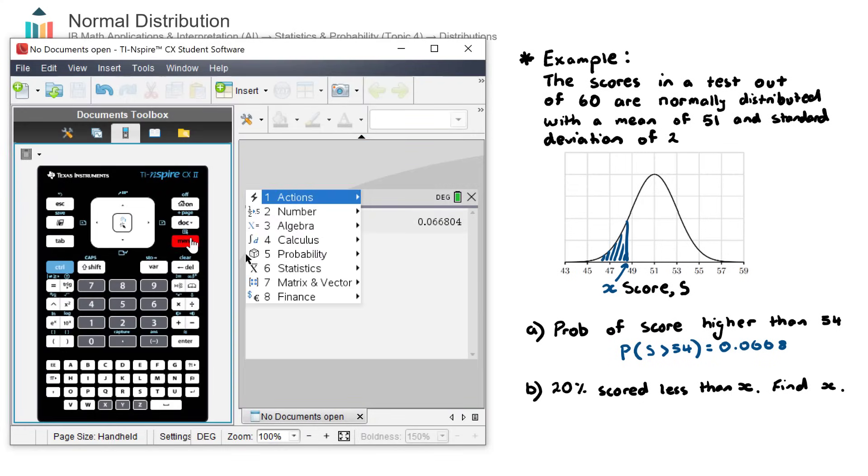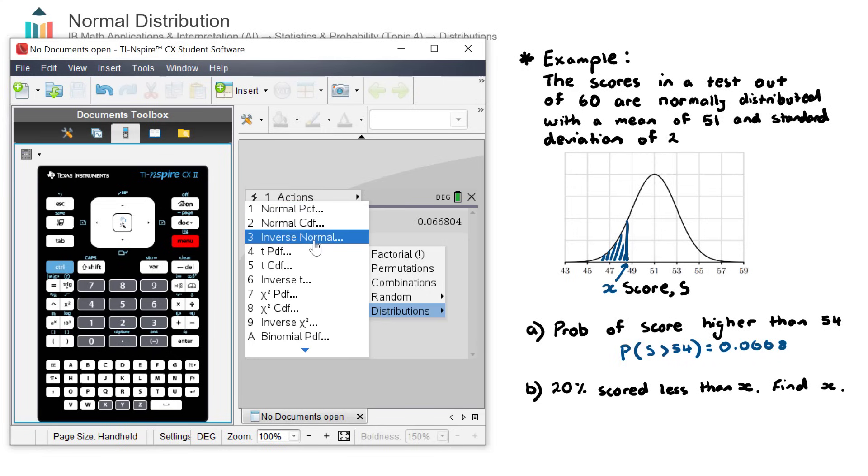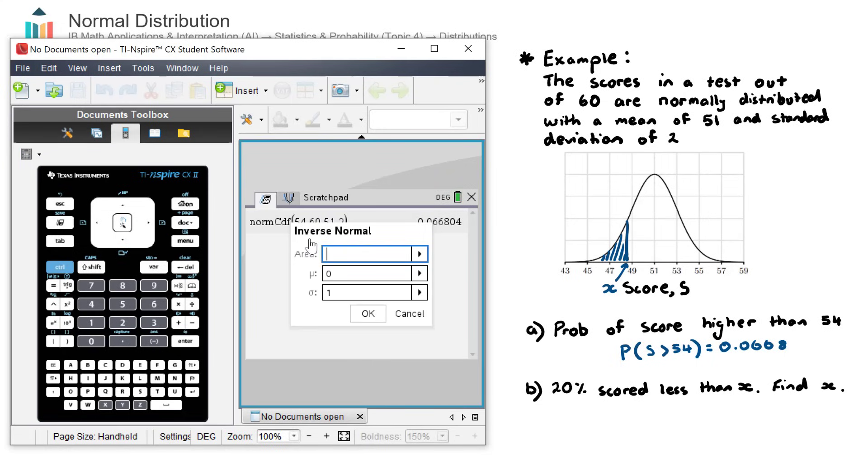Let's go ahead and use that. We go menu, probability, distributions. This time we're going to select inverse normal. So we choose this one when we have the area underneath the curve and we want to find the value on the horizontal axis. In this case here, the test score.